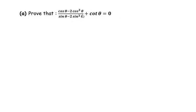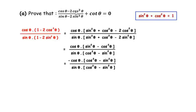Let us start with the left hand side, beginning with this fraction. In the numerator, cos θ is a common factor, so we take cos θ out and inside the bracket remains (1 − 2cos²θ). Similarly in the denominator, sin θ is a common factor, so we take it out and inside the bracket remains (1 − 2sin²θ).